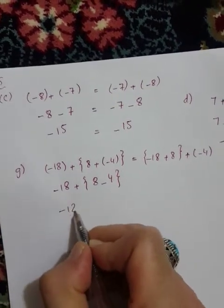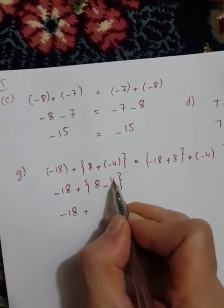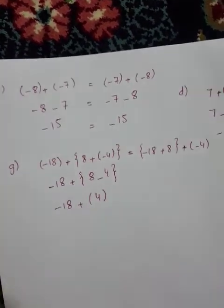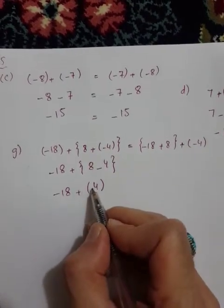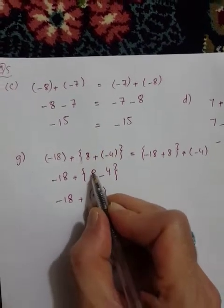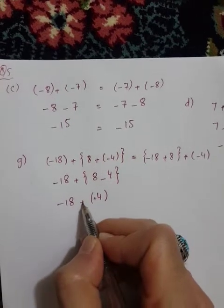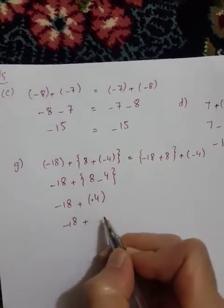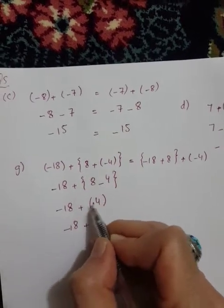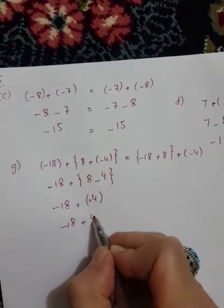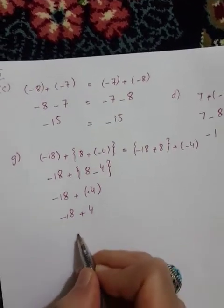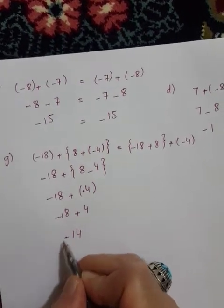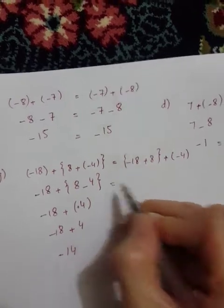Eight plus multiply minus minus four. Minus eighteen plus eight minus four. Simplify: plus multiply plus plus.